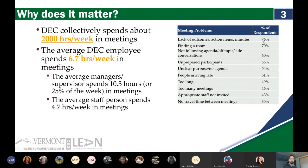Lack of outcomes, action items, and minutes — 76% of respondents identified that as a problem. Finding a room was rated at 70%. Not following agenda and off-topic side conversations was 60%. And even problems like no travel time between meetings — obviously an issue if you've got back-to-back-to-back meetings. Even these less popular meeting issues are still hovering around 50%, so clearly a lot of the meetings we go to are not meeting all those requirements for a successful meeting.